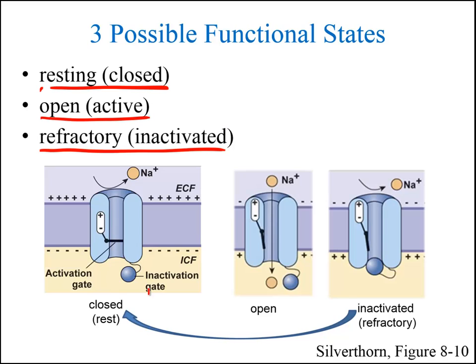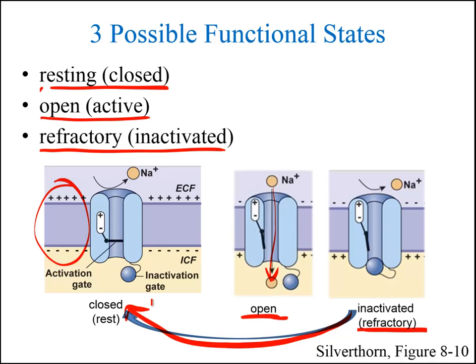For example, a channel in the closed or resting state will, in response to a change in membrane potential, switch to the open state and ions — in this case sodium — can flow through the channel. The channel then transitions to the inactivated or refractory state, and from that state will eventually return to the closed or resting state. Not all channels have all three states — a gated channel will always have a closed and an open state, but only some will also have a refractory state.